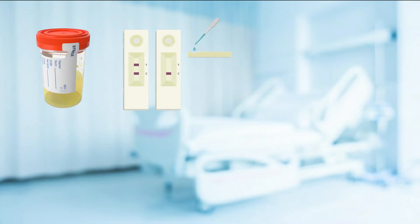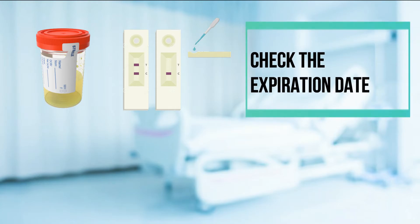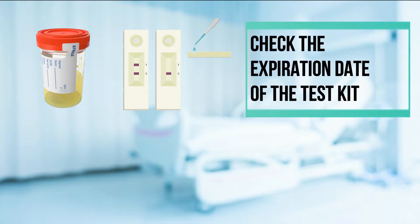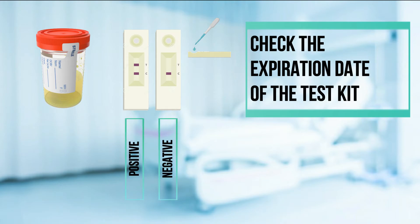Step 8: Open the test kit and place it on the examination table. Also, check the expiration date of the kit. Using a dropper, aspirate some amount of the urine from the specimen bottle and place 3 drops of urine onto the interior area. After that, wait at least 2-4 minutes to determine the result. One line means negative, two lines means positive. Time may vary depending on the manufacturer's instructions.